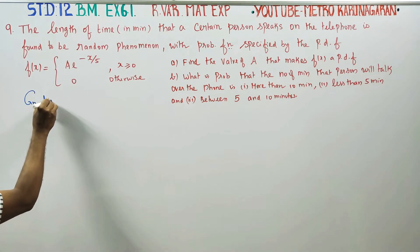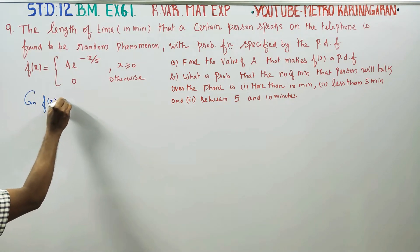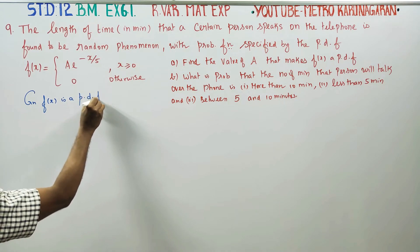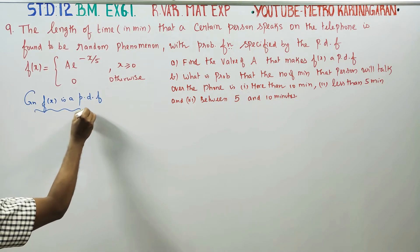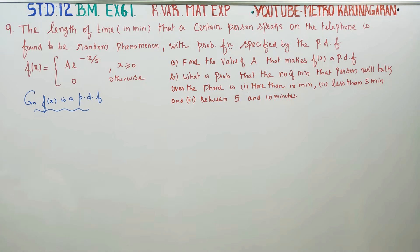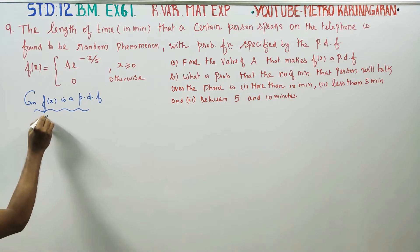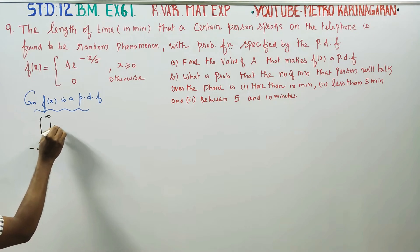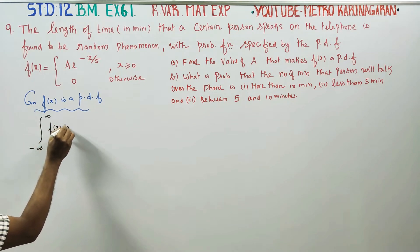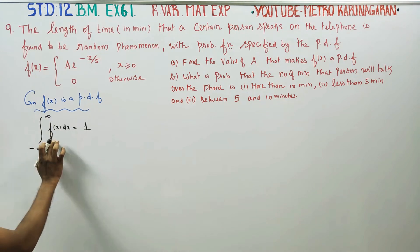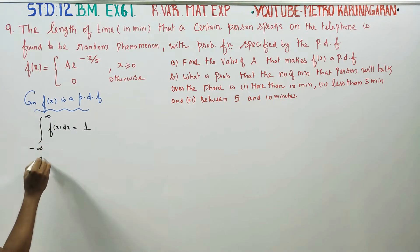Given that f(x) is a probability density function. If f(x) is a probability density function, then the integral from minus infinity to plus infinity of f(x) dx must equal 1. That is, over the full interval, the integral of f(x) dx equals 1.